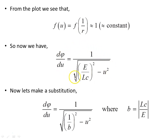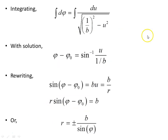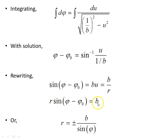Before integrating, we make a substitution: 1/b, where b = |Lc/E| is the impact parameter — the angular momentum times the speed of light over the energy. This makes the expression exactly integrable. Integrating dφ over this expression, we find the constant of integration φ₀, giving φ - φ₀ = arcsin(u·b). Taking the sine of both sides: sin(φ - φ₀) = b·u = b/r, and rearranging: r·sin(φ - φ₀) = b. Choosing φ₀ = 0, this is simply a straight horizontal line.